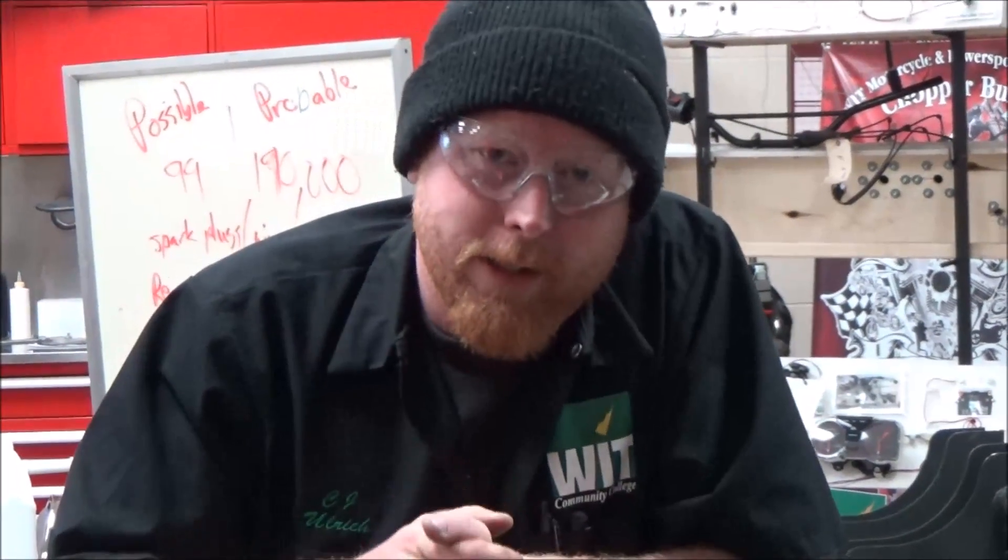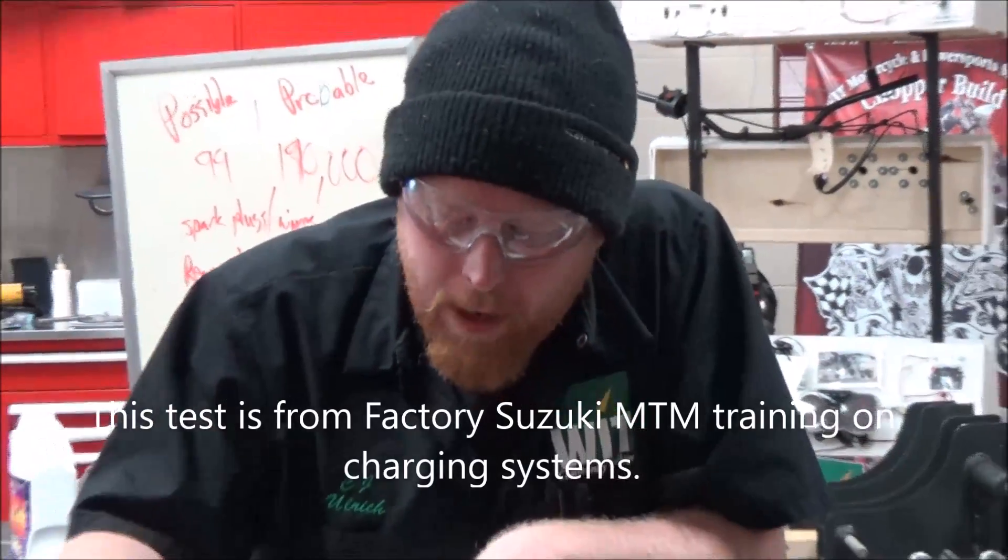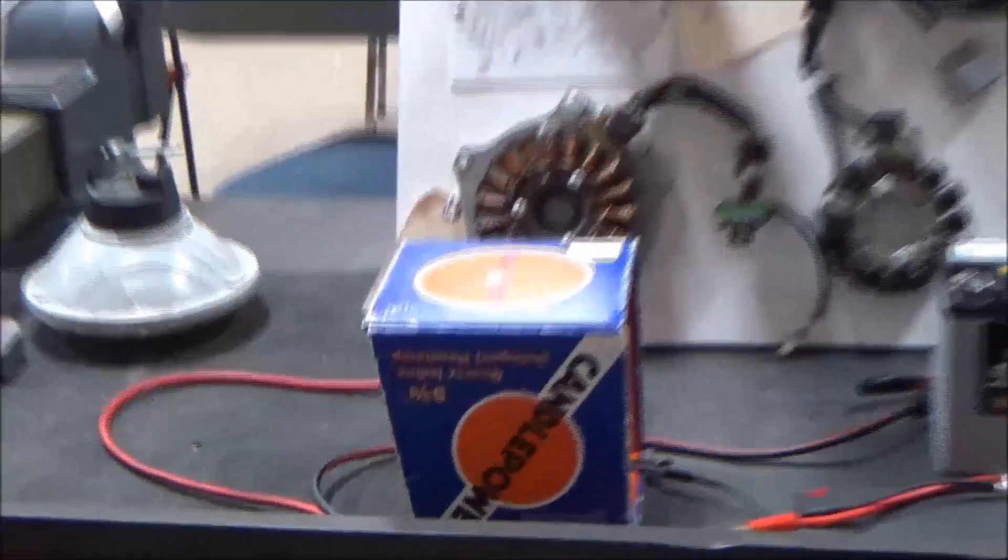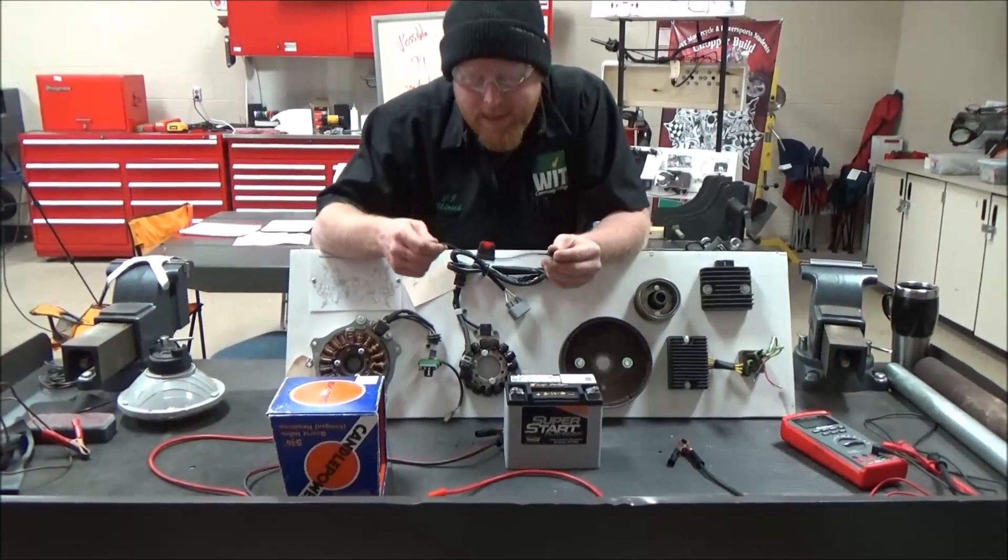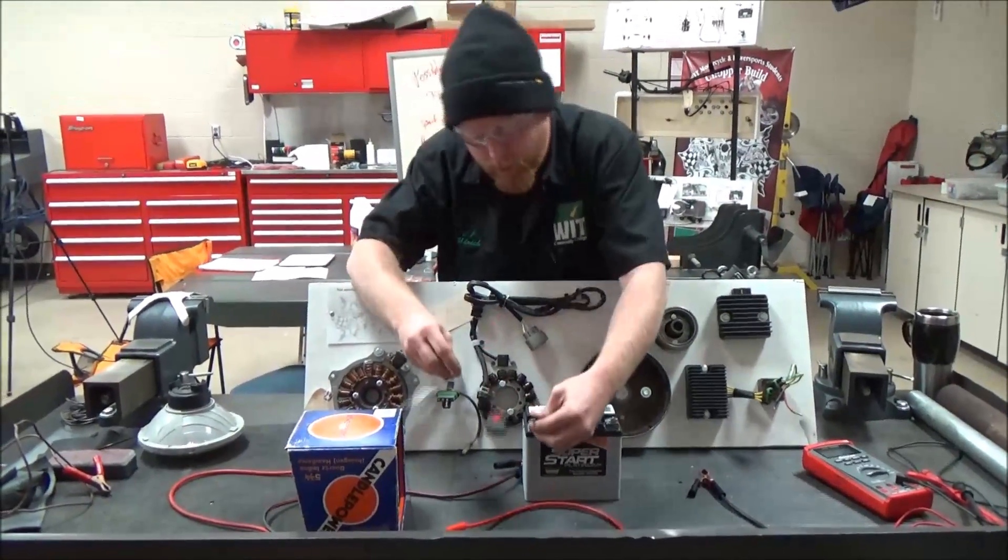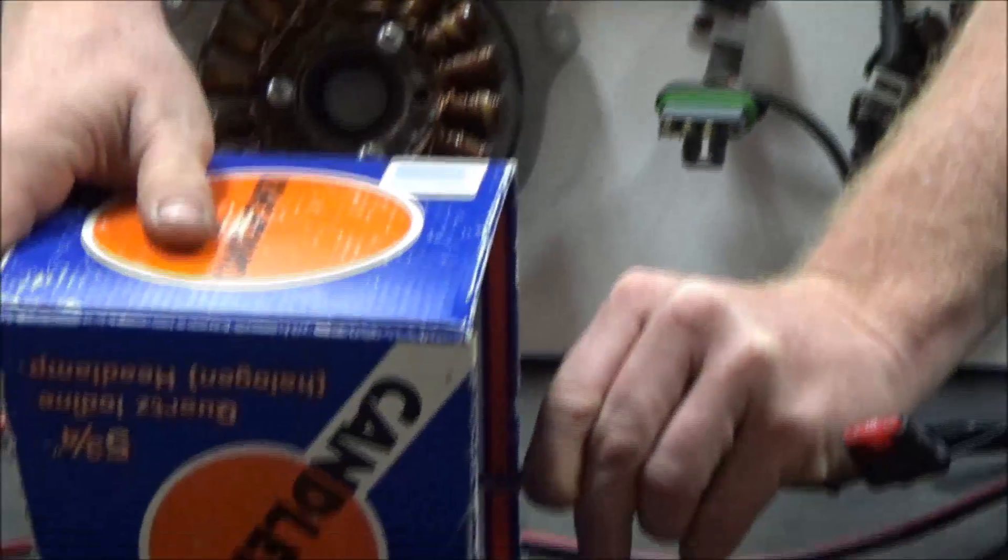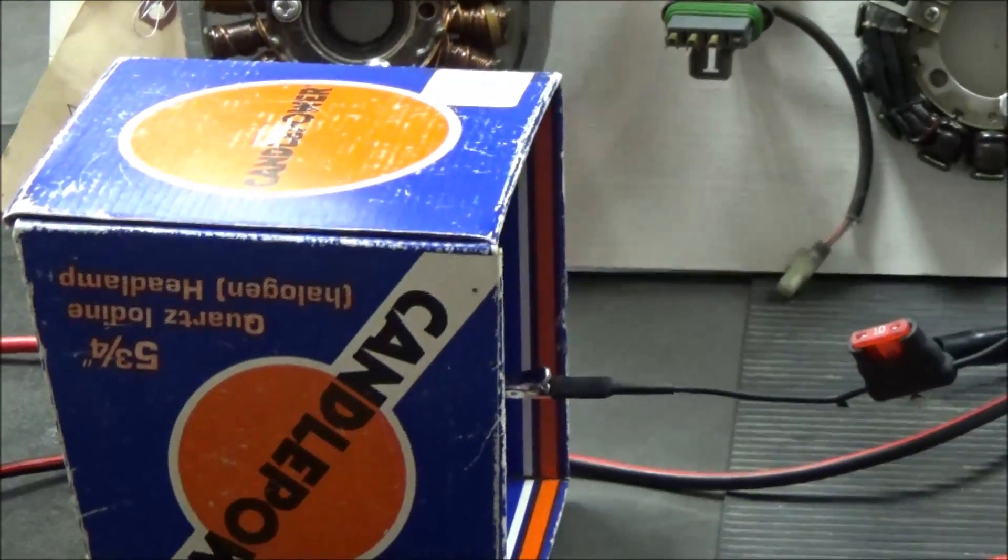We are going to be doing a load continuity test through a stator using a 12 volt battery and a 50 watt headlight. We're going to start off with our positive connection using a 10 amp fuse. We're going to put it in through the positive and we're going through the light bulb, which will also confirm our continuity once we get it set up.